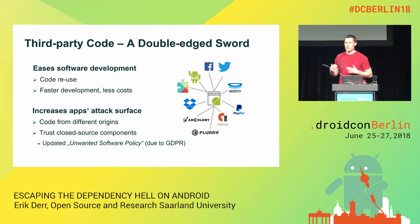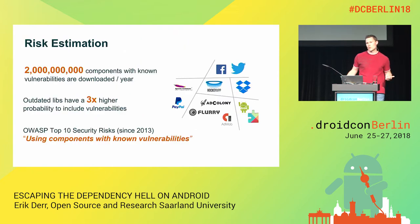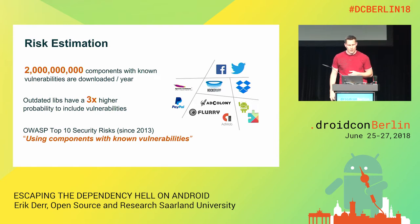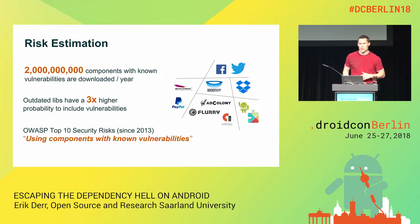Google recently updated its unwanted software policy, presumably because of the GDPR data protection law. As a result, you now have to be explicit about which user data you process and how you process it. This does not only include the application code, but any third-party code included in your application. Now, imagine you're using closed source components — how do you know how the library behaves? Let's look at some numbers on the risk of using third-party code.